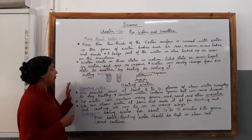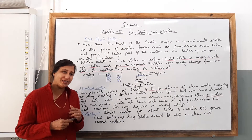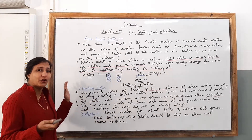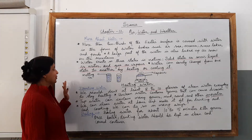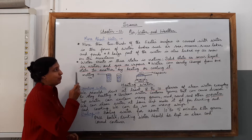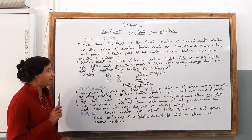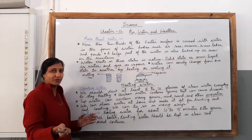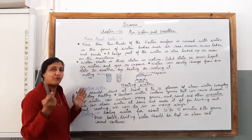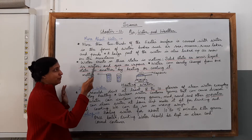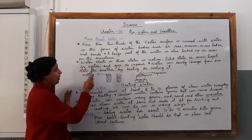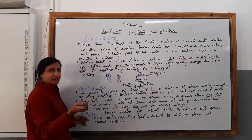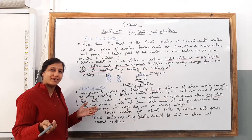Let's begin our class and try to understand something more about water. More than two thirds of the earth's surface is covered with water — remember this, children. The earth has water in the form of various water bodies such as seas, oceans, rivers, lakes, and ponds. These are the various water bodies present on the surface of the earth.